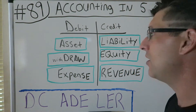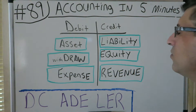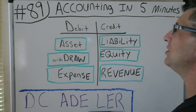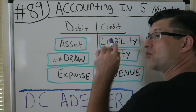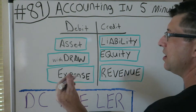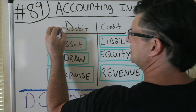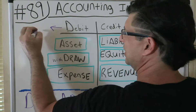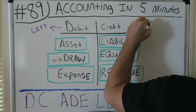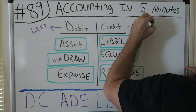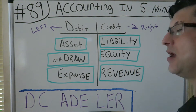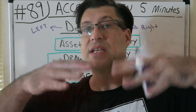For every transaction it's going to be either a debit or a credit. Neither is good or bad — debit is just left, credit is just right. Neither good nor bad — that's the first thing.